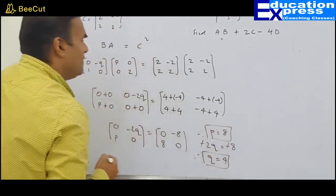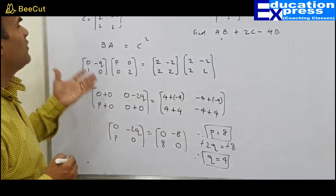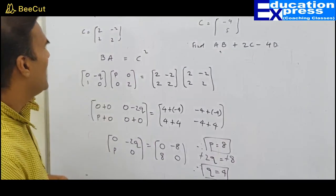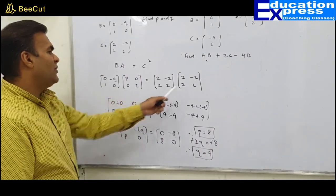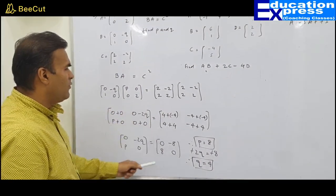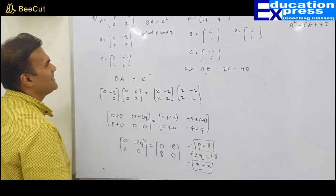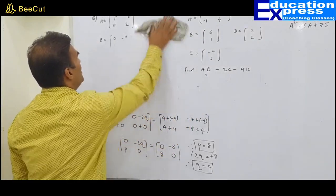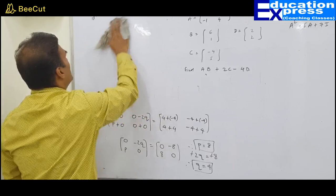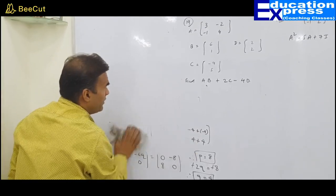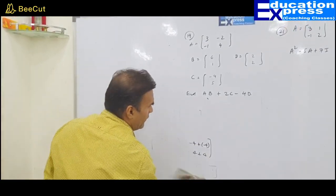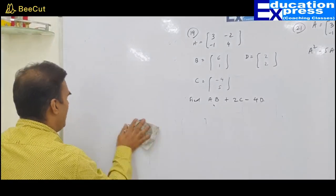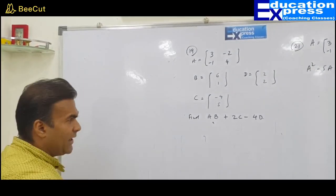Isn't it very simple, my dear friends? This was the question asked for 3 marks in the board exam — simple multiplication. Move on to question number 19. Everything is given to you, you only have to multiply it and put it in a proper perspective.